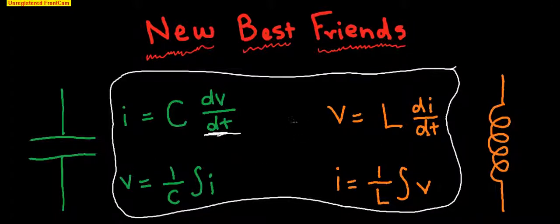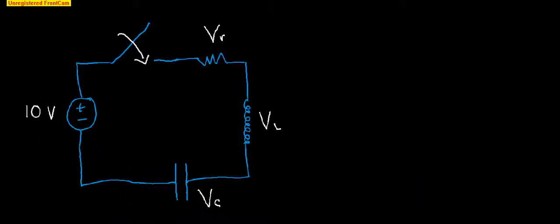You've got a similar case for inductors. The voltage is equal to the inductance times the change in current over time, and the current for an inductor is equal to one over the inductance times the integral of the voltage. So these equations are your new best friends for this class.